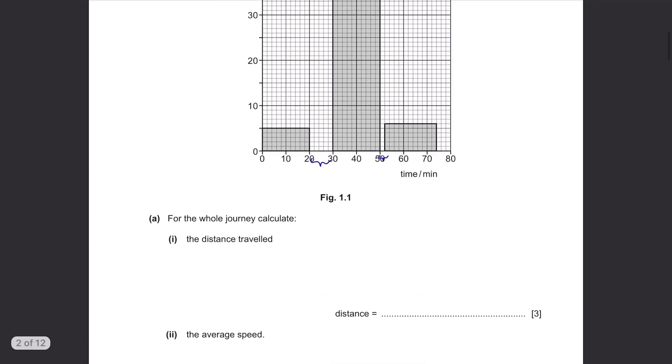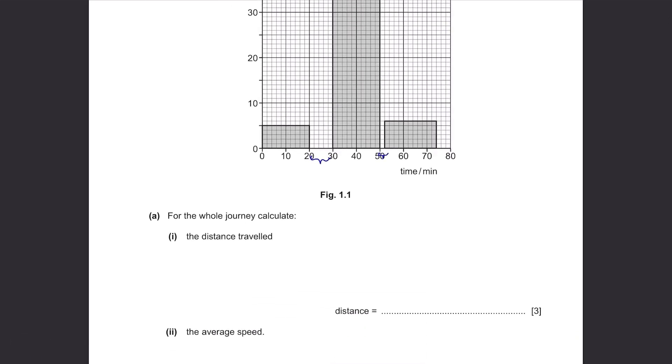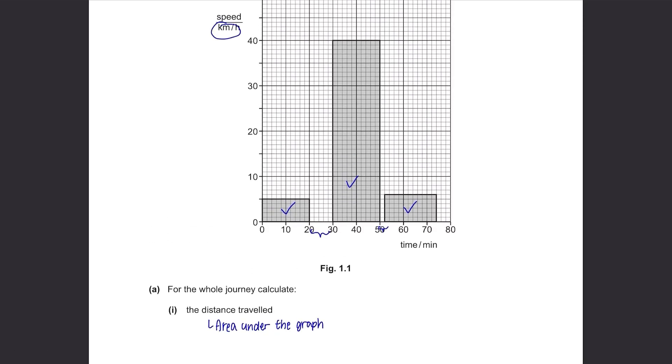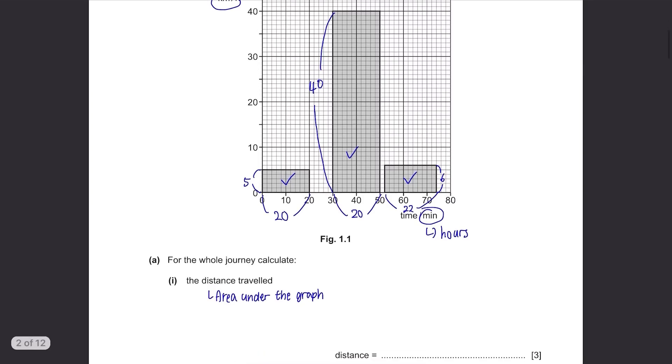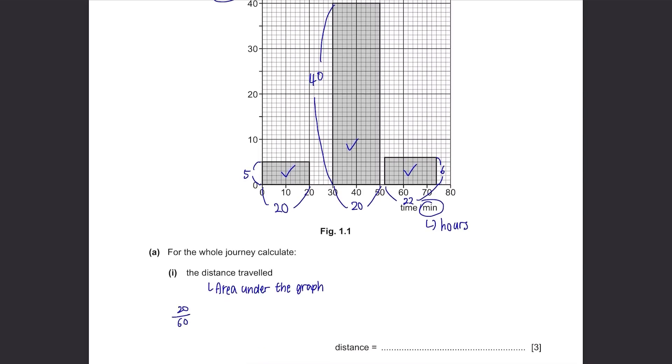Part A. For the whole journey, calculate the distance travelled. To find the distance from a speed-time graph, you need to find the area under the graph which are these shaded areas. Be careful, the units are different. Speed is in km per hour and time is in minutes. So when we calculate, we need to change minutes to hours by dividing it by 60. So length times height, 20 over 60 times 5 plus 20 over 60 times 40 plus 22 over 60 times 6. The answer is 17 km.